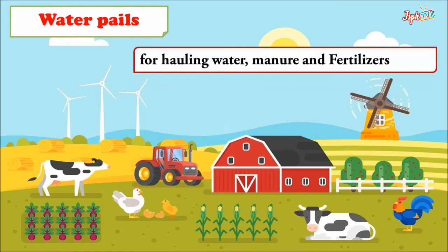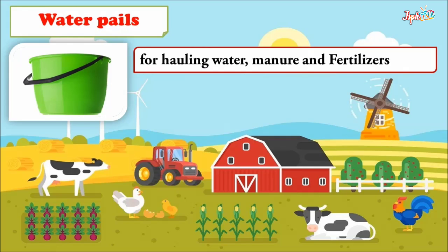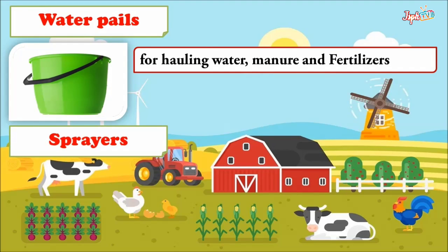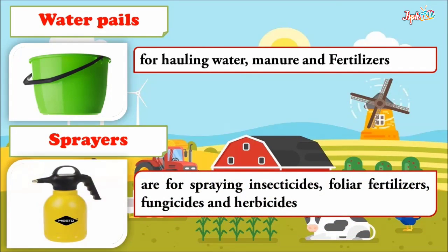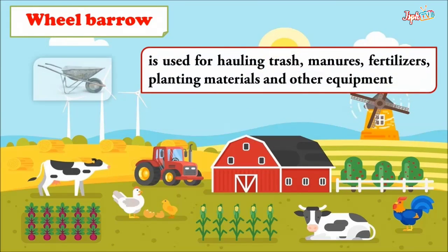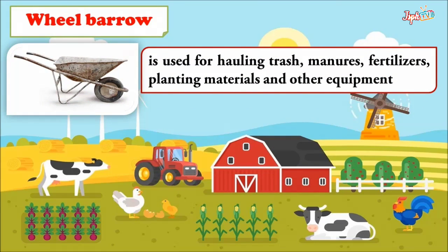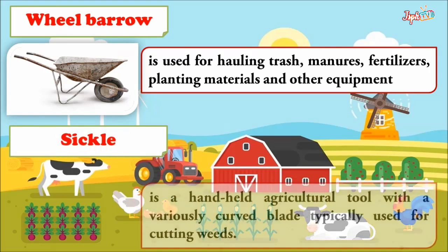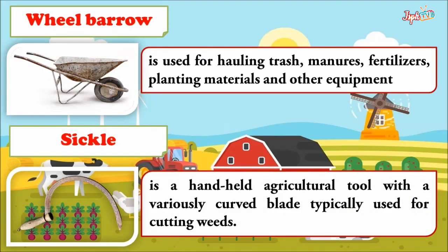Sprinklers are used for watering seedlings and young plants. Water pails are for hauling water, manure, and fertilizers. Sprayers are for spraying insecticides, foliar fertilizers, fungicides, and herbicides. The wheelbarrow is used for hauling trash, manures, fertilizers, planting materials, and other equipment. The sickle is a handheld agricultural tool with a curved blade typically used for cutting weeds.